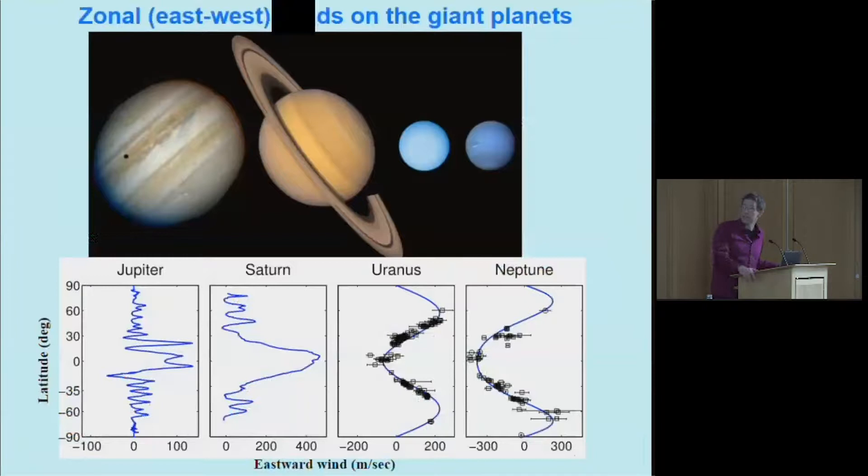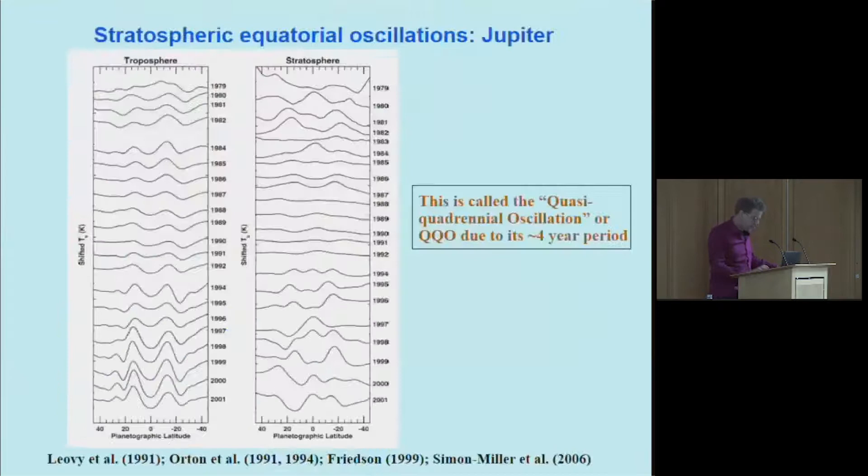Switching to observations of the giant planets, we know they're banded. These are the measured east-west wind speed or zonal winds for Jupiter and Saturn, Uranus and Neptune. One could ask questions about what are the conditions under which you would expect an atmosphere to organize into this banded cloud structure at all, versus being you know comprising isotropic turbulence or just being polka-dotted by a hundred different Great Red Spots.